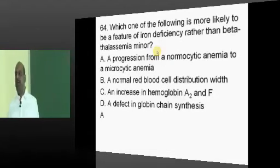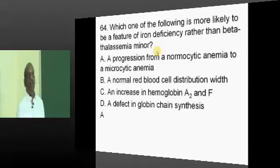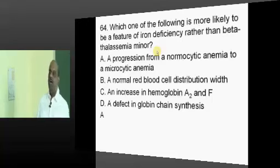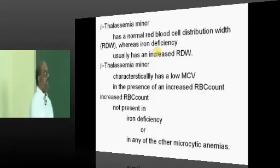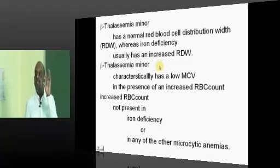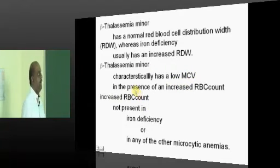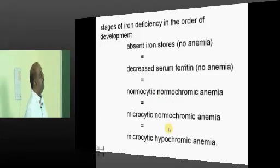Iron deficiency versus beta thalassemia minor — what is the main difference? A progression from normocytic to microcytic anemia is more likely a feature of iron deficiency rather than thalassemia minor. In thalassemia minor there will be a normal red cell distribution width, whereas in iron deficiency there is poikilocytosis and therefore an increased red cell distribution width.